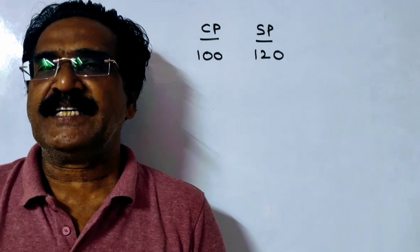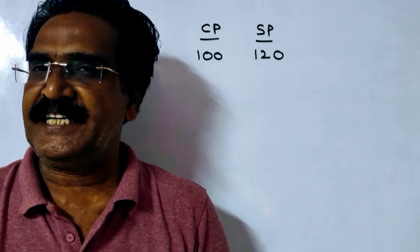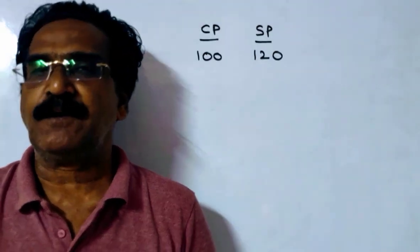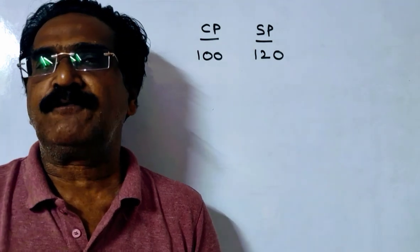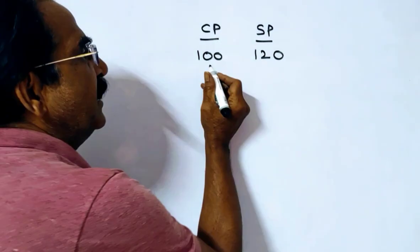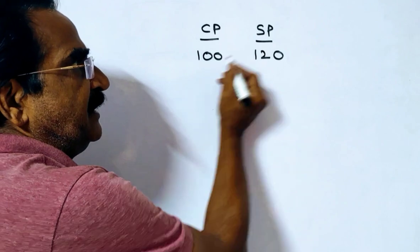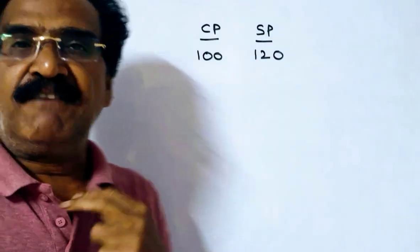Hi friends, good morning. Please look at the next problem in profit and loss. The problem is given in the description box. Here the shopkeeper wants to make a profit of 20 percent. What does it mean? If cost price is 100, the selling price must be 120.